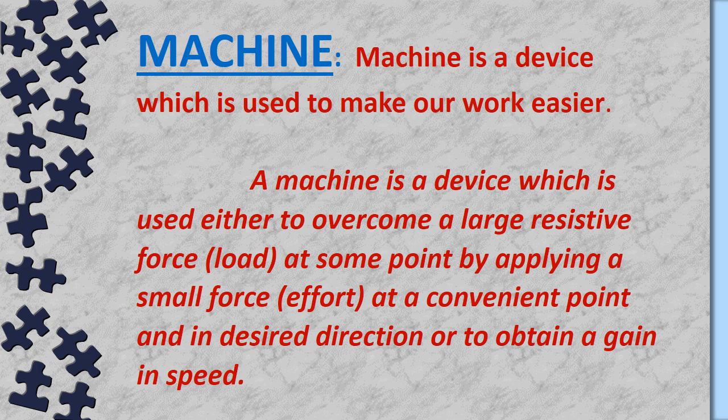In scientific language, a machine is a device which is used either to overcome a large resistive force, i.e. load, at some point by applying a small force (effort) at a convenient point and in a desired direction, or to obtain a gain in speed.